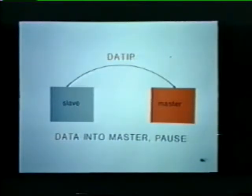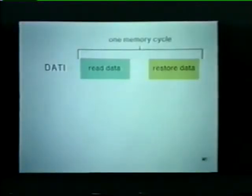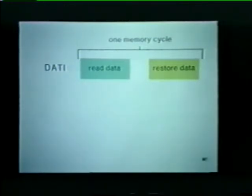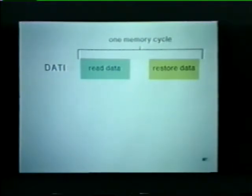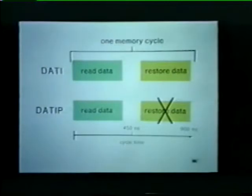Let's briefly compare Data I and Data IP transactions. During a typical memory cycle, the memory reads information from the selected core location and transfers it to the bus. Because data is lost when the core is read, the data must be rewritten into the same core location — this is called the restore cycle. Now, suppose we are planning to write new data into the core location. Why bother to restore the old data when we know it's to be replaced? That's the purpose of a Data IP transaction: it eliminates the restore cycle, thereby cutting the memory cycle time in half.